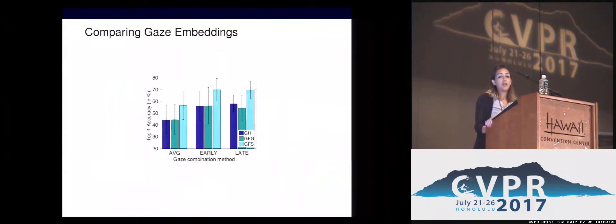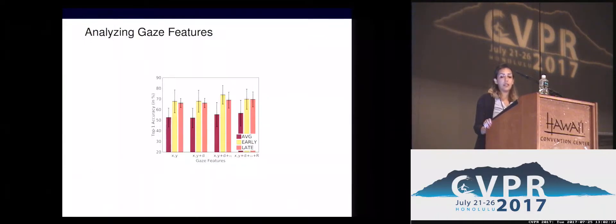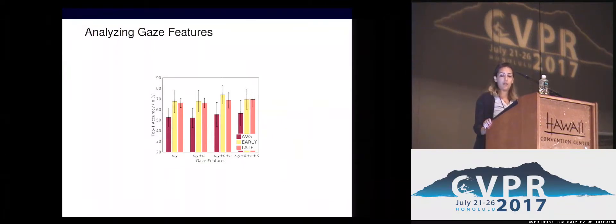Our results on a subset of birds shows that gaze features with sequence has the best performance, indicating that sequence information helps more than spatial information. Comparing different gaze features shows that as annotators become familiar with the categories, their concentration drops, and thus adding the pupil diameter doesn't help improve performance.